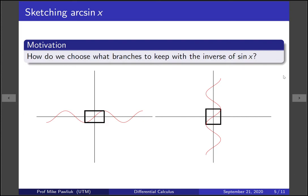So now for this one we have a lot of branches that we could possibly choose. We could choose this region and restrict the domain of sine to this region. We could also choose this region. That's another way to get a function. Or we could choose this region.